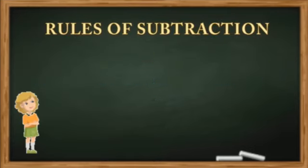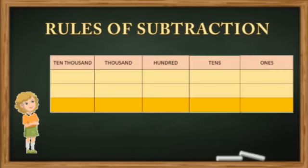Dear students, there are certain rules or ways to subtract numbers. For subtracting numbers, we need to arrange them in columns according to their place value — ones, tens, hundreds, thousands, and so on — and then we subtract ones, tens, hundreds, thousands, and ten thousands separately. Here is an example using five-digit numbers arranged in those columns.